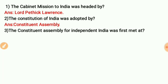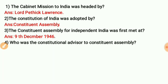The Constituent Assembly for independent India first met on 9th December 1946. Remember that date — 9th December 1946 was when the Constituent Assembly first met.